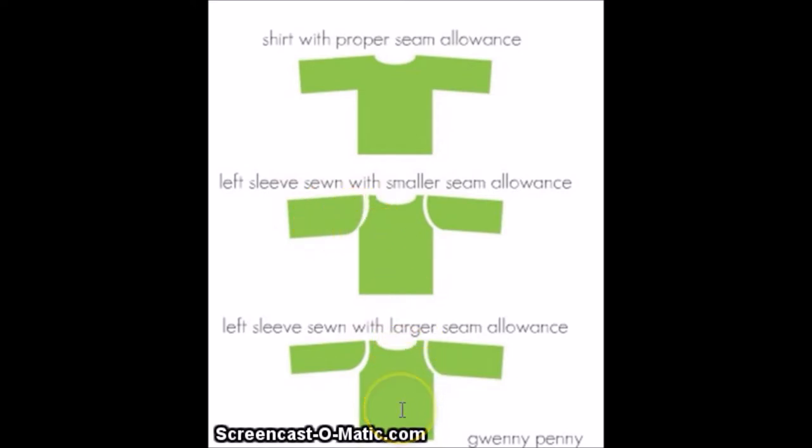And then here, this is an example of the left sleeve sewn with a larger seam allowance. So you have a small sleeve here with a large sleeve, and so it's important to keep it consistent throughout your sewing so that you don't end up with your garment being out of balance and kind of funny.